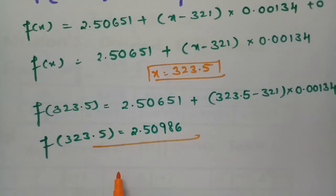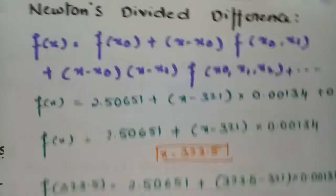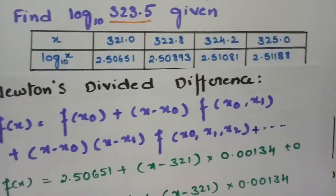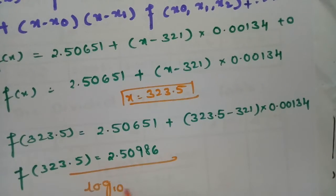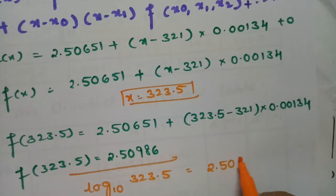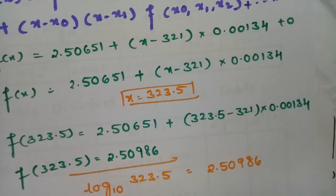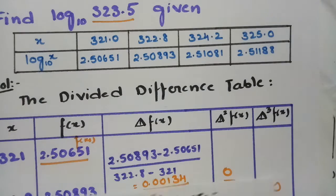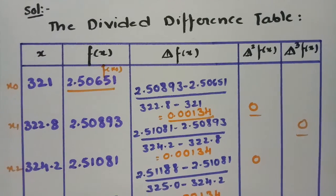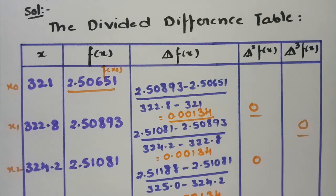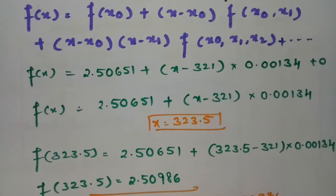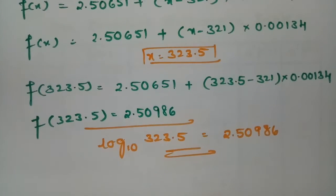So log base 10 of 323.5 is 2.50986. This is how we calculate using the Newton divided difference formula — it's quite simple. We created the divided difference table, found only one non-zero first divided difference of 0.00134, substituted all values into the formula, and obtained the answer.